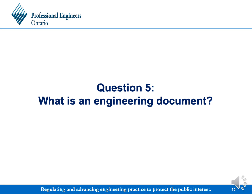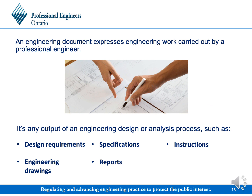What is considered to be an engineering document? An engineering document is a document of any kind that expresses engineering work carried out by a professional engineer. In general, it is any output of an engineering design or analysis process, such as design requirements, engineering drawings, specifications, reports, or instructions. For the full definition and examples of engineering documents, please refer to the use of the professional engineer's seal practice guideline.